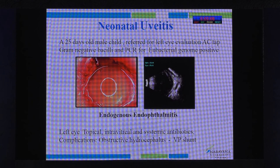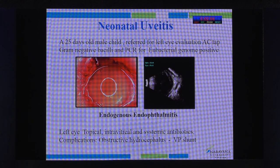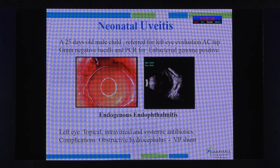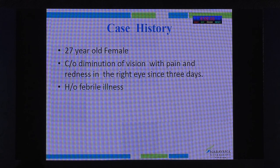Pediatric endogenous endophthalmitis is most often recognized at a later date. A 24-month-old child had an abscess in the hand and subsequently developed decreased vision. AC aspirate showed gram-negative bacilli. Despite aggressive treatment with topical, intravitreal, and systemic agents, we could not save the eye. The child developed obstructive hydrocephalus requiring VP shunt and was ultimately lost. This highlights that endogenous endophthalmitis is often associated with serious systemic infections that must also be treated aggressively.